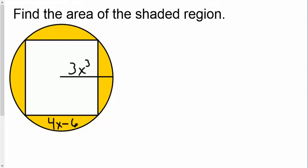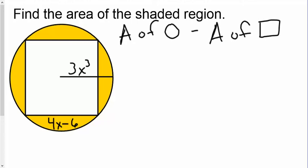Hello, and today we're going to be talking about finding shaded regions. You've already seen this probably about two or three days ago when we were dealing with monomials, but since we have learned binomials we figured we would give you a little bit of a refresher. First, I'm going to be finding the area — the shaded region is the area of a circle minus the area of the square.